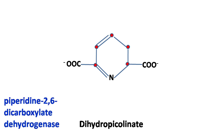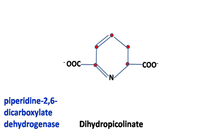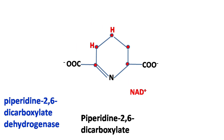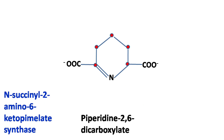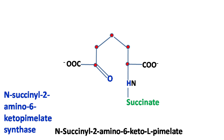Next, dihydropicolinate is converted into piperidine-2,6-dicarboxylate by the enzyme piperidine-2,6-dicarboxylate dehydrogenase. A succinyl-CoA molecule is then added to yield N-succinyl-2-amino-6-keto-pimelate.